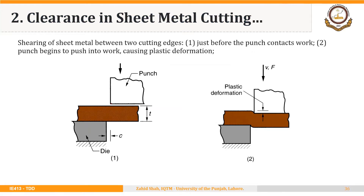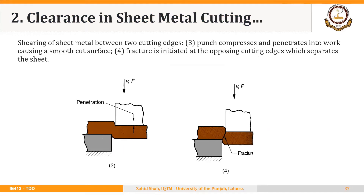Just before cutting, a proper clearance must be given between punch and die. Once the punch touches the sheet, it penetrates and presses the sheet. After that, fracture starts to occur at both the punch edge and the die edge. It is very important that both fractures meet properly.